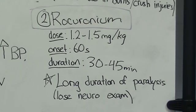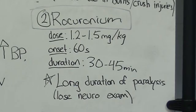Rocuronium is dosed at 1.2 to 1.5 mg per kg and is administered IV. Rocuronium has an onset of action of about 60 seconds, similar to succinylcholine. However, it has a duration of action of 30 to 45 minutes.